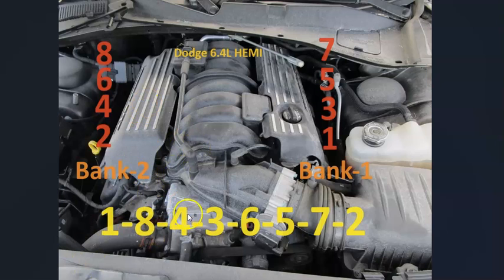The firing order for the Dodge 6.4 liter Hemi is going to be 1-8-4-3-6-5-7-2. And so that's basically it — if this video helps you, please click like.